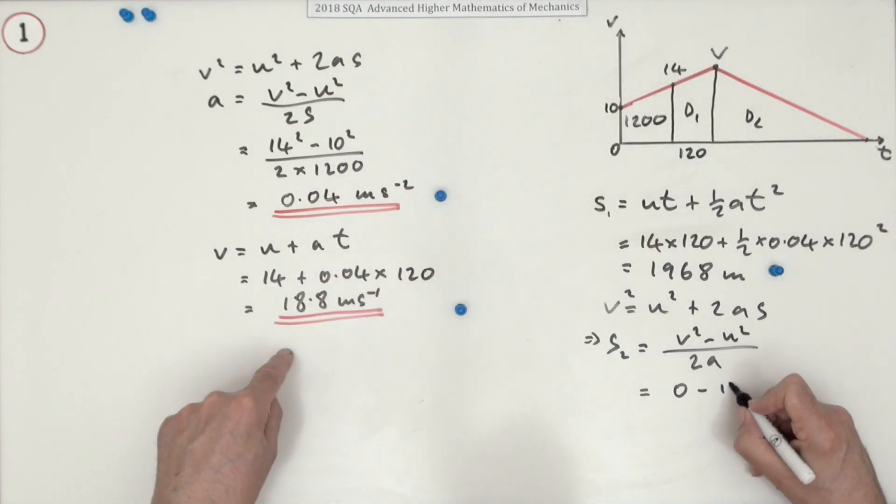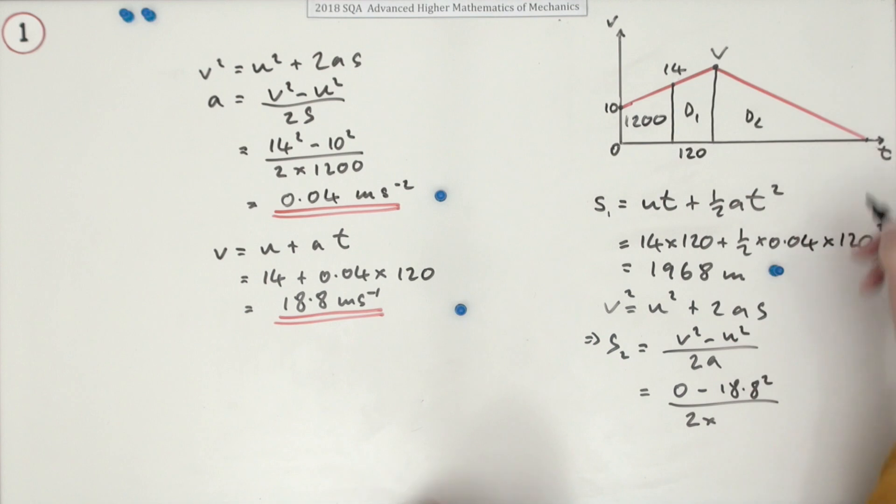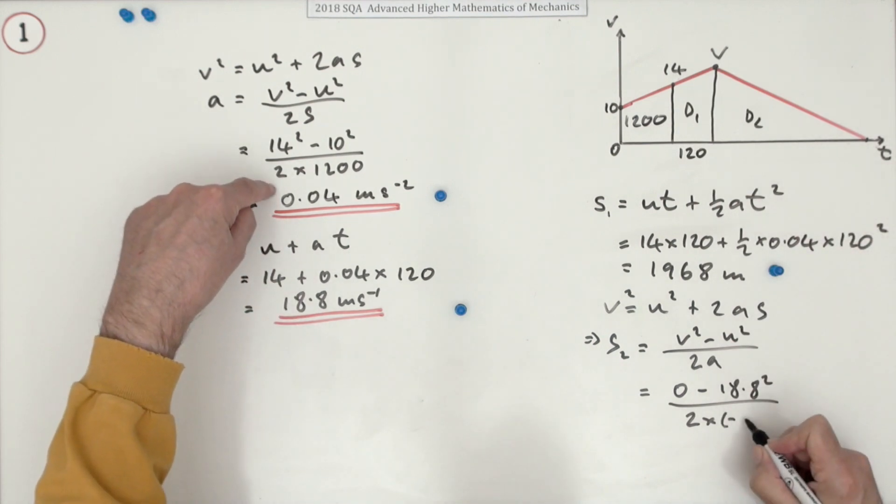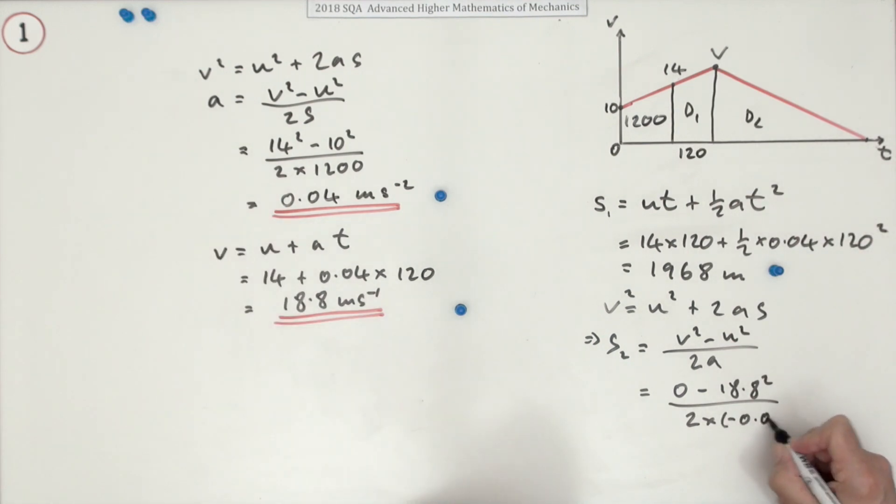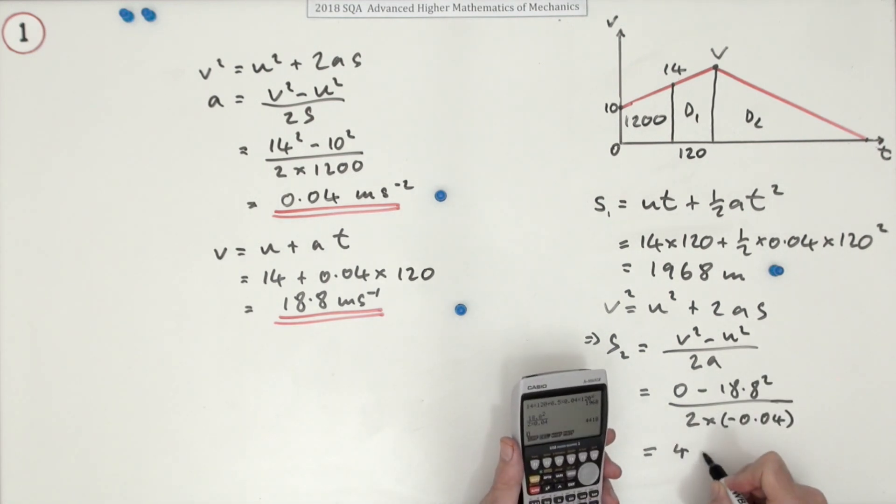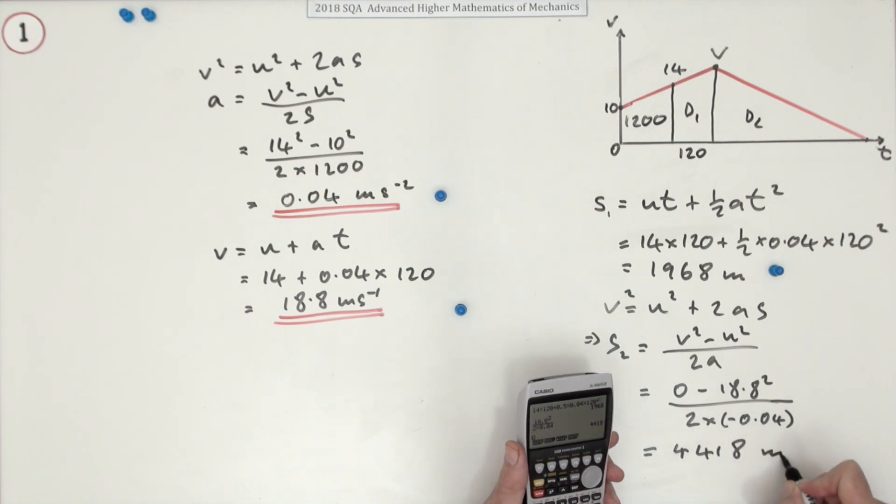Maximum speed, we had it here, 18.8 squared over two times, it's decelerating, so it's two times negative 0.04. Pop it in your calculator and you get 4418 meters.